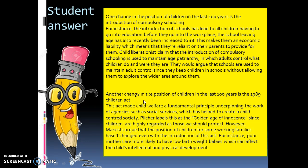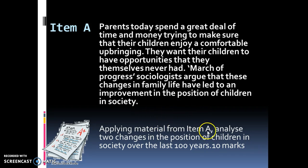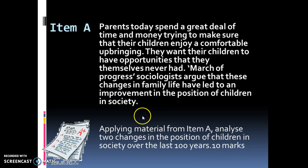In the second paragraph, the student has chosen the Children Act and child welfare, linking it into Pilcher's golden age of innocence. And there's a bit of analysis where they question whether it is a golden age for every child. However, going back to what the question was actually asking — to apply material from the item and analyse two changes in the position of children — the problem is the student hasn't used anything from the item. Even though they've got two decent explanations suggesting why the position of children has changed, they haven't used the development from the item, and that's the whole point of this question: showing application of skill.